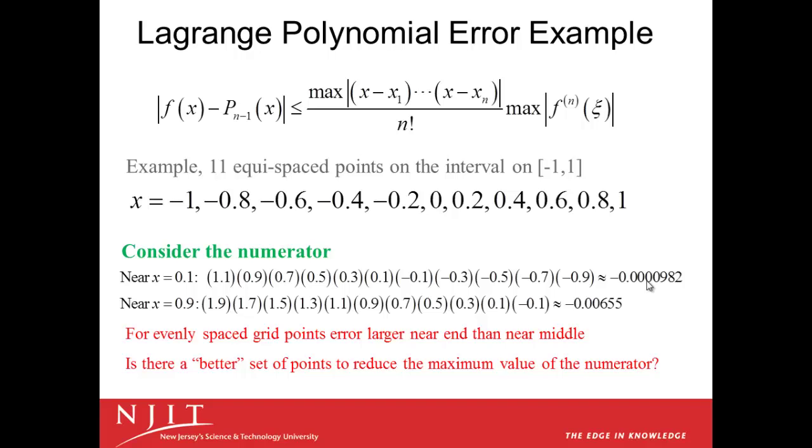Note, of course, that at the grid points, at x equal minus 1, at x equal minus 0.8, x equal minus 0.6, and so forth, that the error is 0, that's exactly where we fit the polynomial. So for evenly spaced grid points, the error is larger near the end of the interval than near the middle. And in this case, we see about 100 times as big error near the ends. So the question we ask is, is there a better set of points we can use to reduce the maximum value of the numerator?